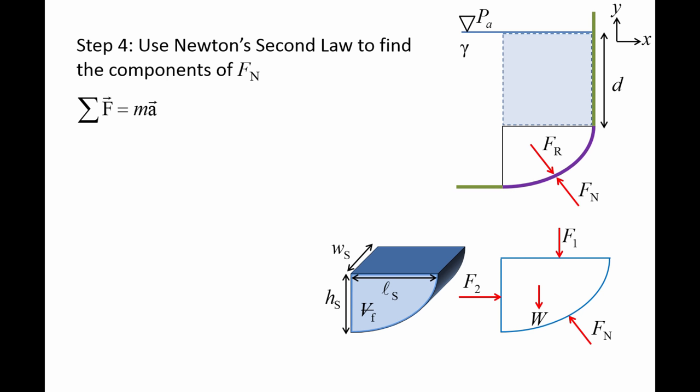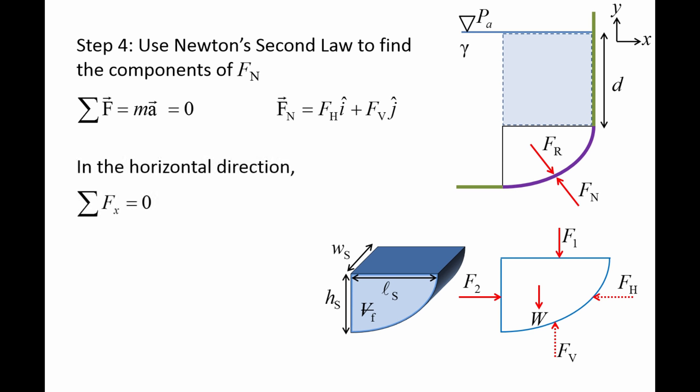We apply Newton's second law on the isolated fluid body to determine the components of Fn. The sum of the forces acting on the isolated fluid body is equal to its mass times its acceleration. Since the fluid body is not moving, its acceleration is zero, and the right side of the equation becomes zero. The normal force vector Fn can be broken into a horizontal component Fh and a vertical component Fv. The sum of the forces in the x-direction is equal to zero, so F2 minus Fh equals zero, giving us Fh equals F2.